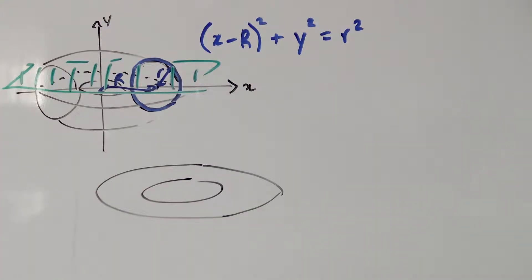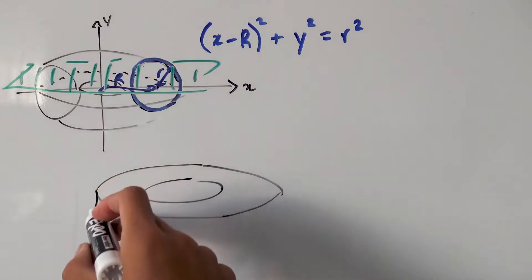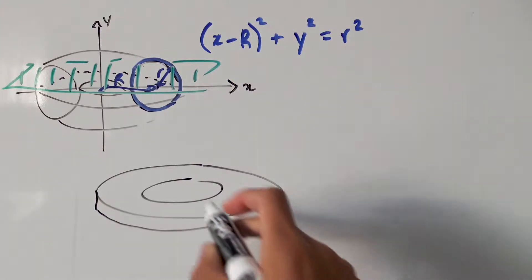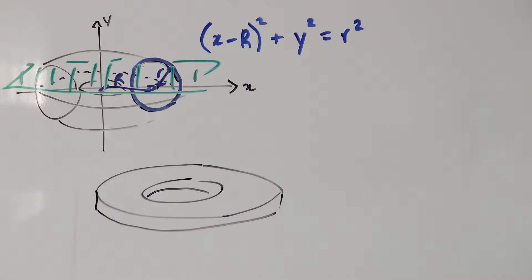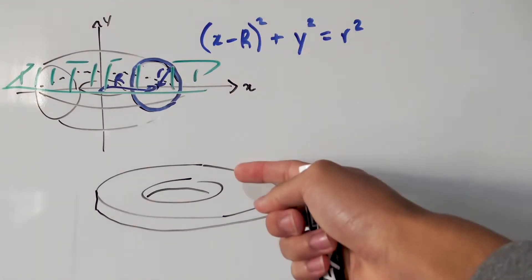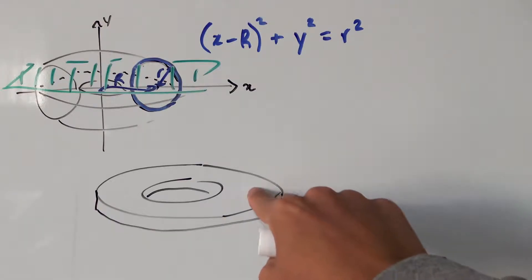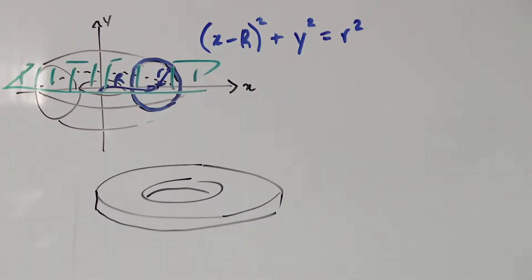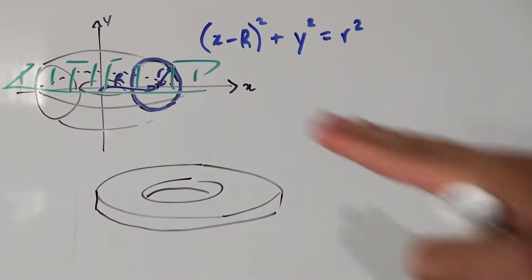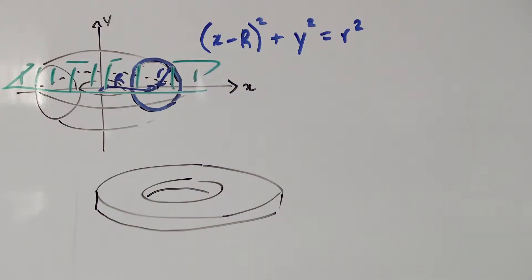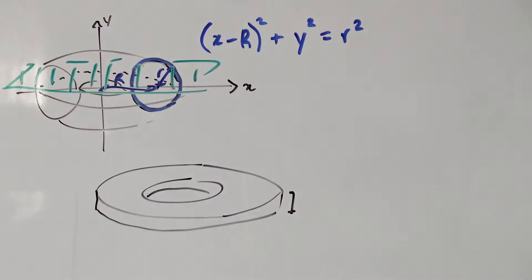We want to take many, many slices along our doughnut so we can use an integral to add them all up. Each of these washers will have some infinitesimal width. The dimensions of each washer will vary depending on where we cut on our doughnut. Since we're cutting along the y-axis, it's a good idea to use y as our variable, because this infinitesimal width is exactly dy — we're slicing infinitely many times along the y-axis.